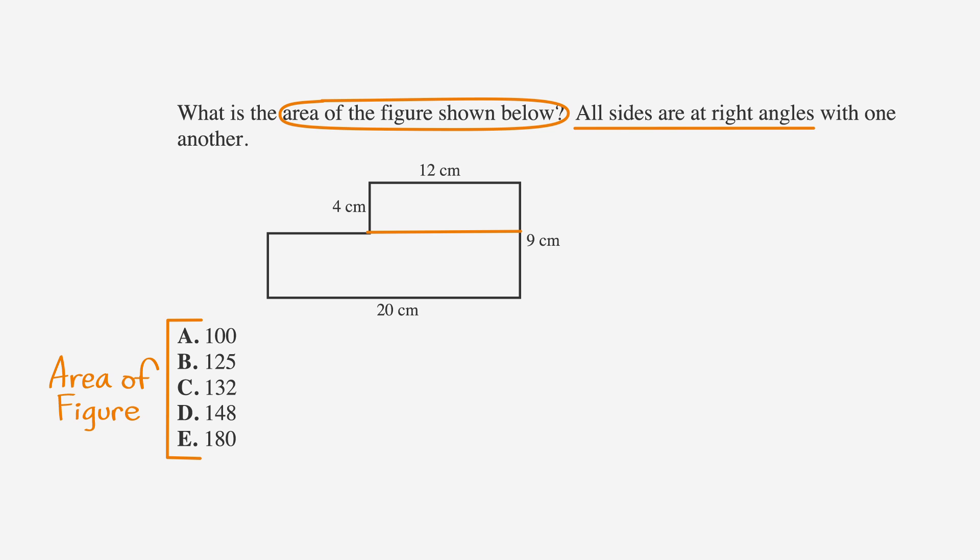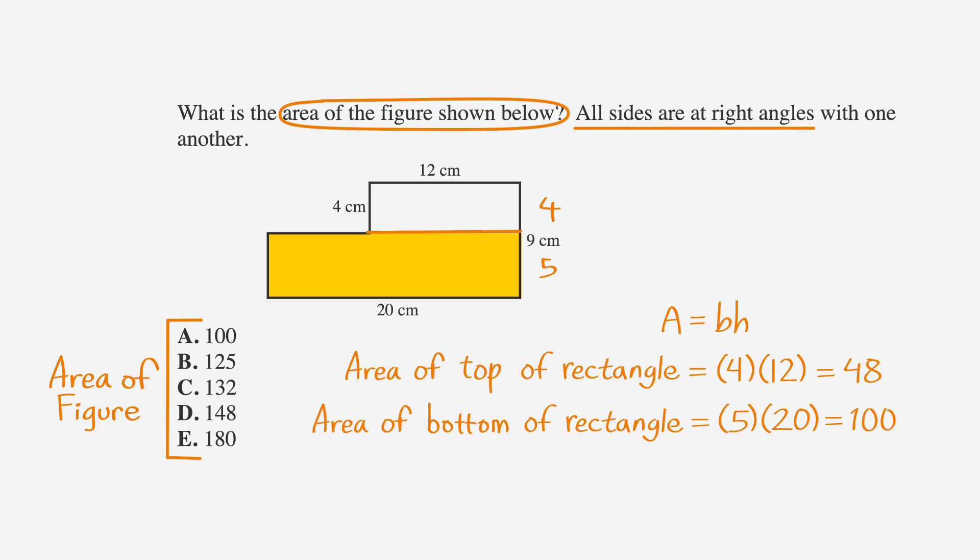If we do, we get two rectangles. One has a height of 4 and a base of 12, and the other has a height of 5 and a base of 20. So if we use our formula, area equals base times height, we get 4 times 12 equals 48 for the top rectangle, and 5 times 20, or 100, for the bottom rectangle.